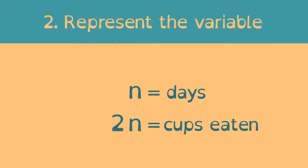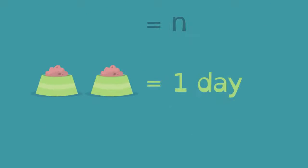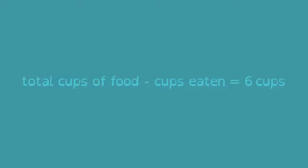2n represents the number of cups eaten. Here's why. Since every two cups eaten represents one day, the number of cups eaten can be found by multiplying 2 times n. Let's put it all together.